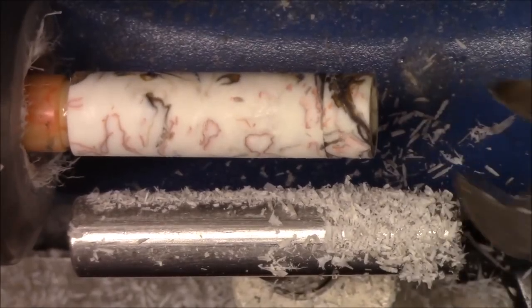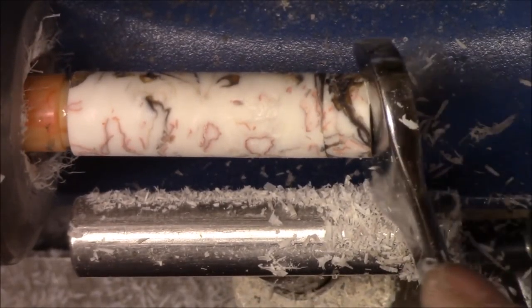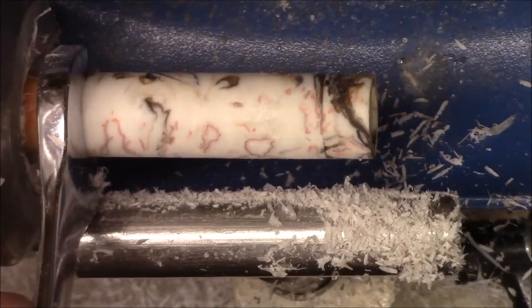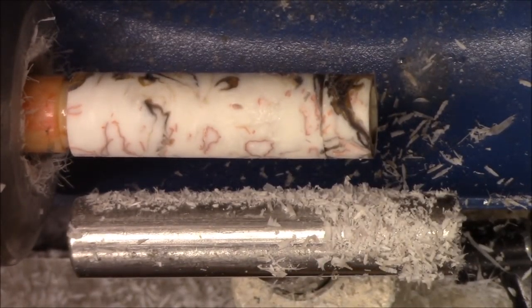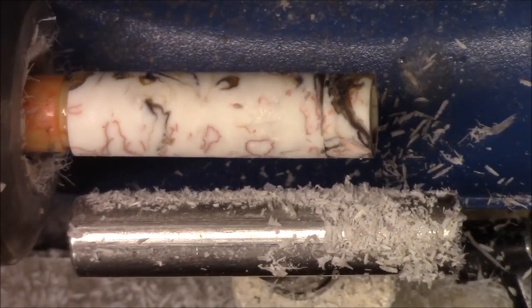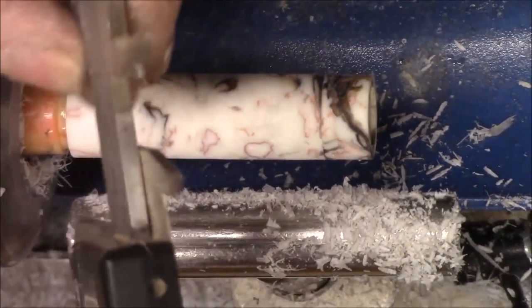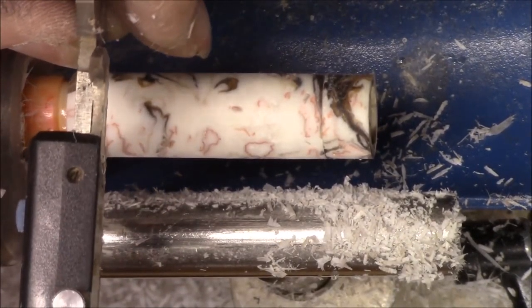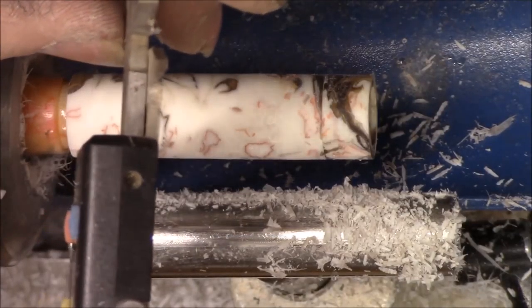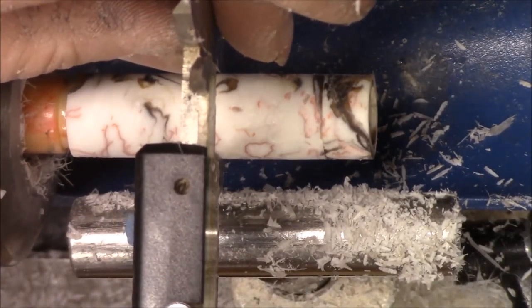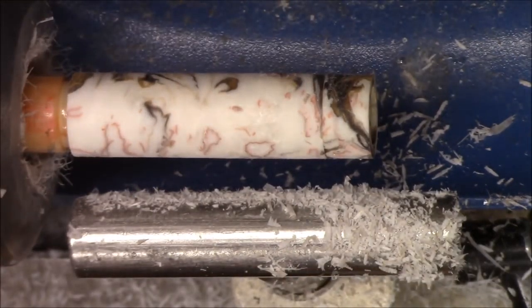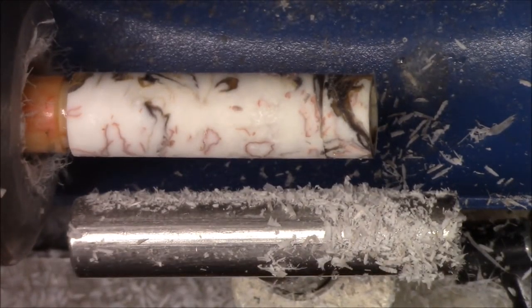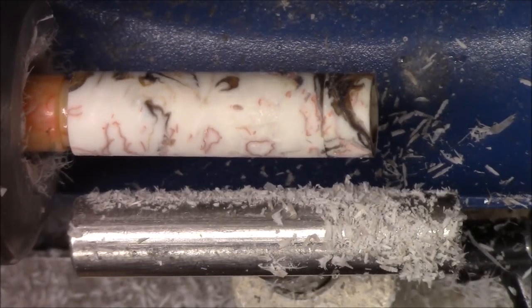All right, we've got it turned down to 5 eighths like I wanted, which is 625. Let's see what we've got. We've got 632, 635, so we need to come off about 20 more thousandths.